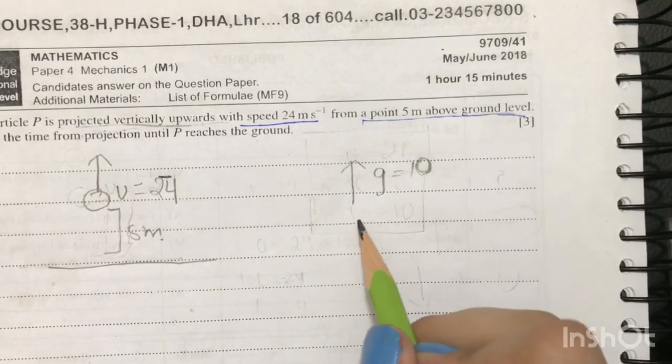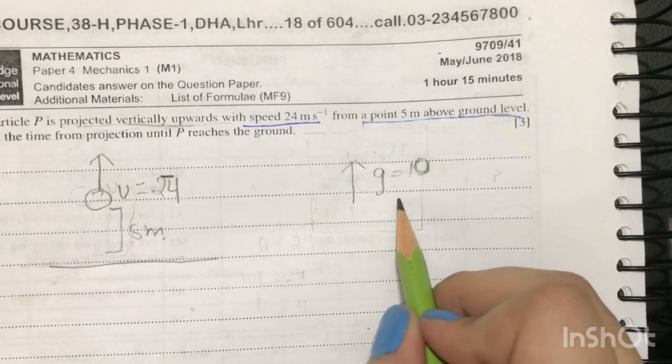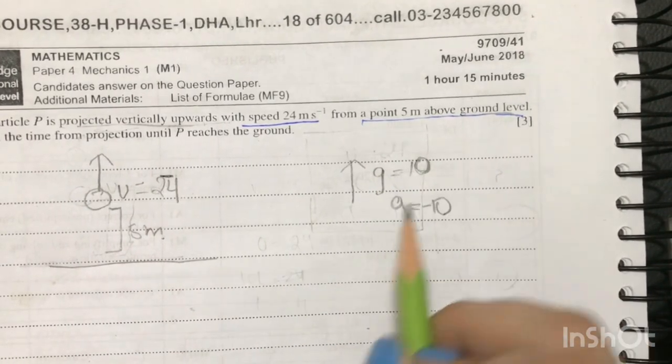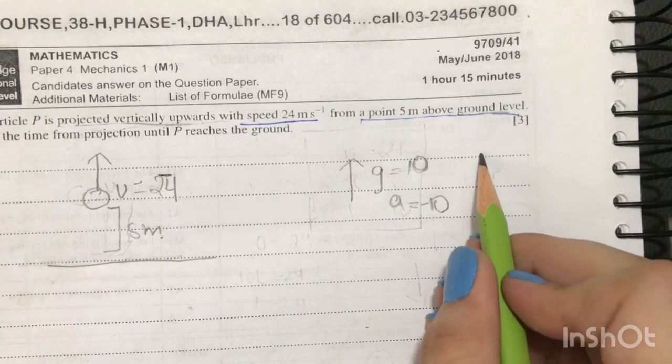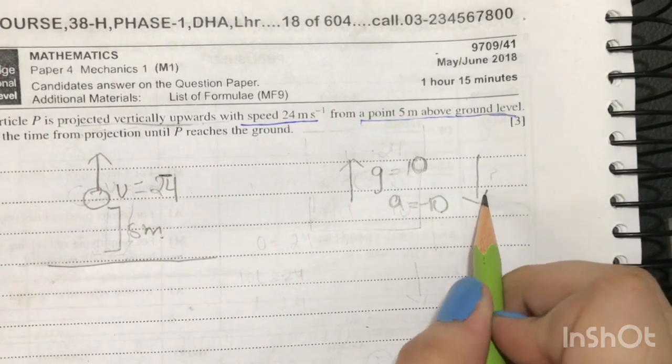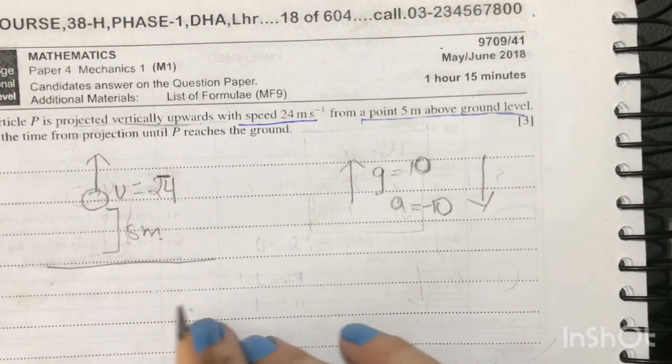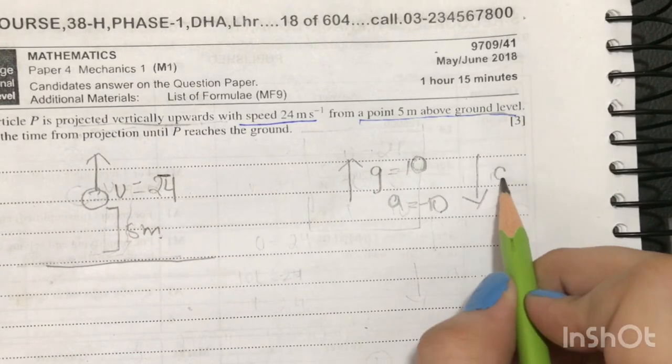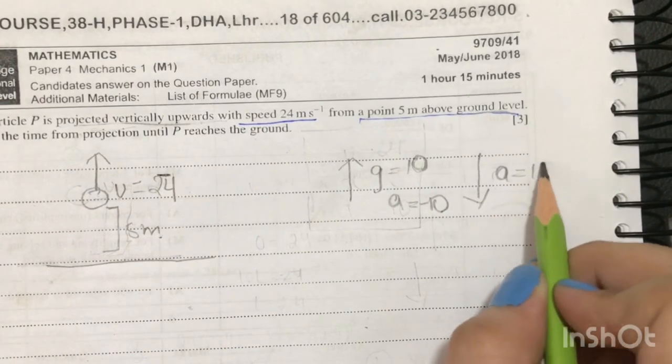Hence when a particle is moving upwards, your acceleration will be minus 10. Now with that same logic, when a particle is moving downwards it is moving with the force of gravity, so the acceleration will be positive 10.